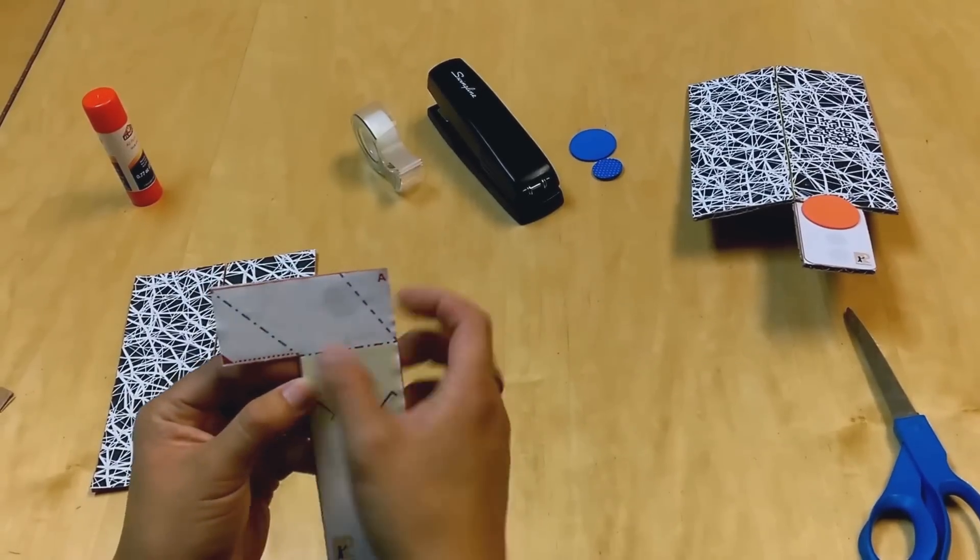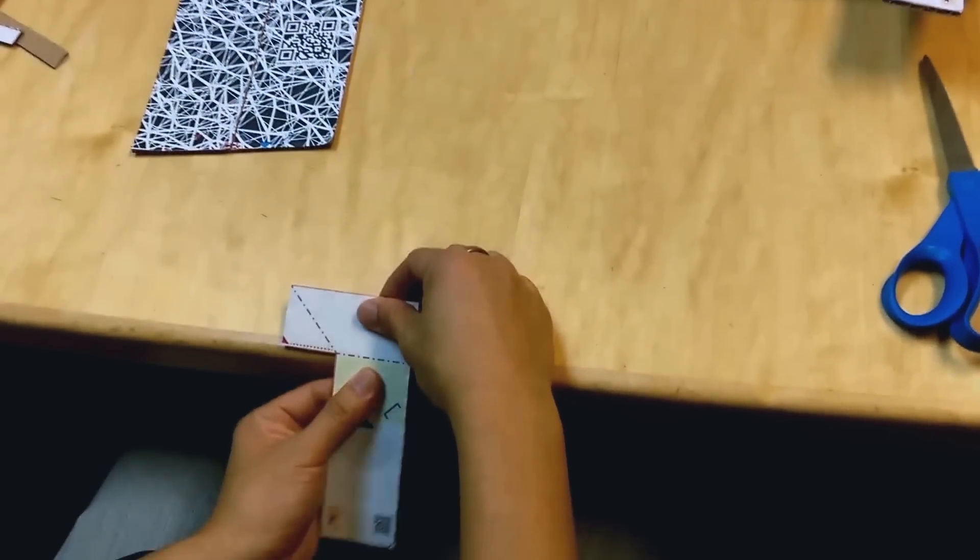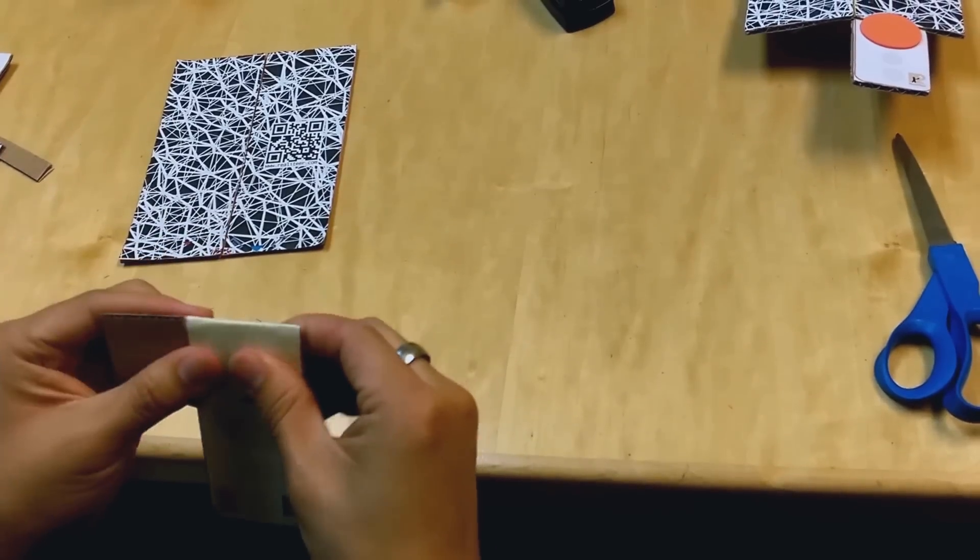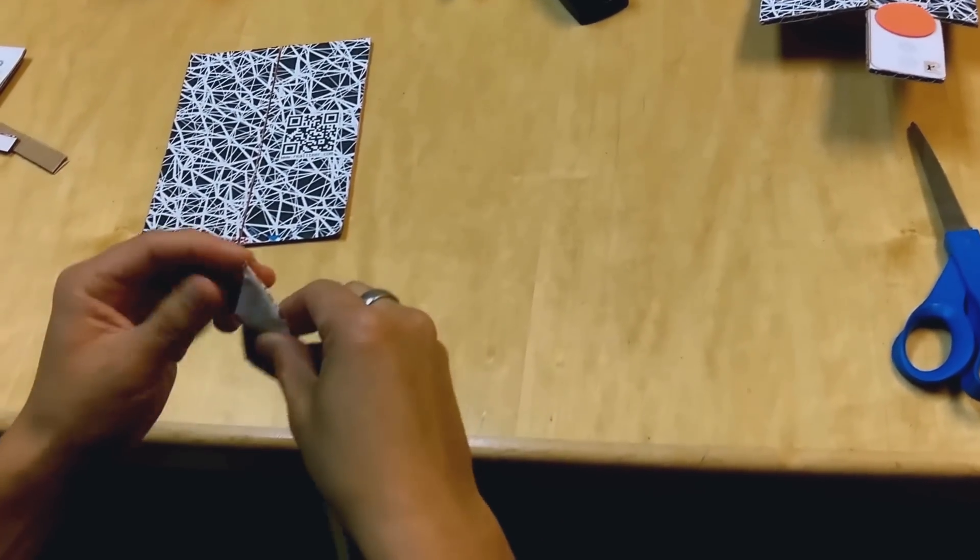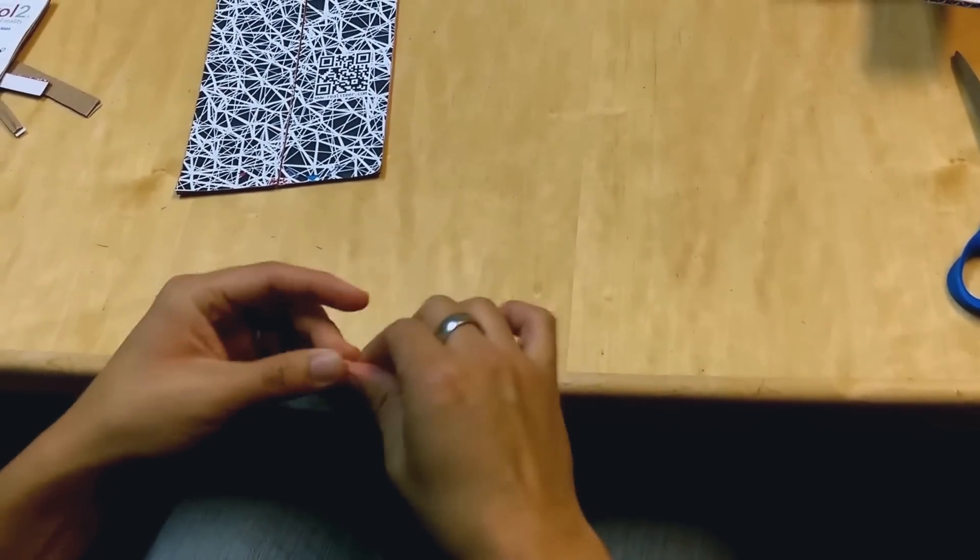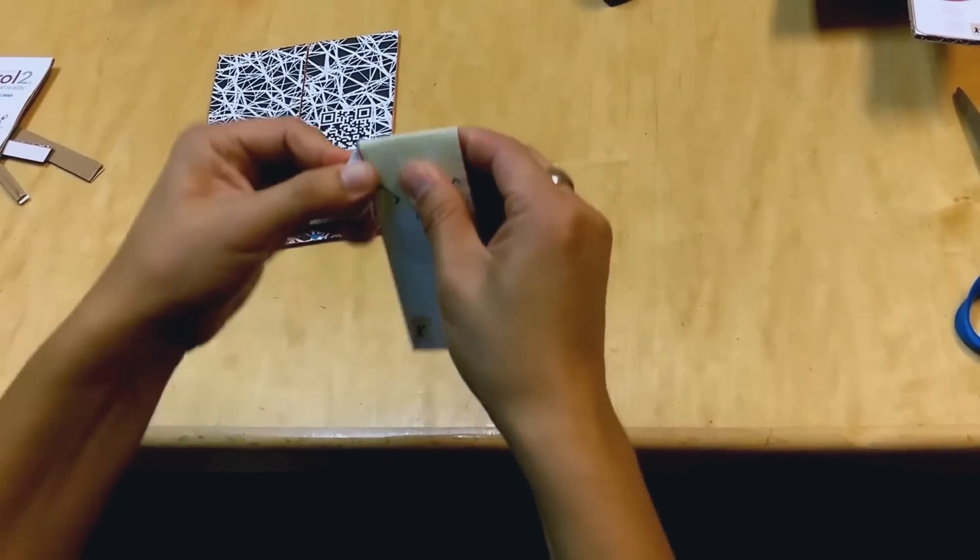We fold the mountain fold and the valley fold. You can use the corner of your table to make sure you fold straight. This is going to become your handle.